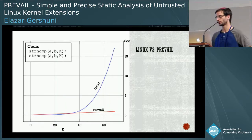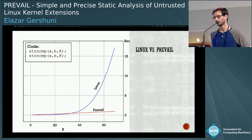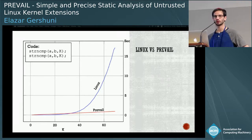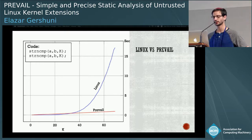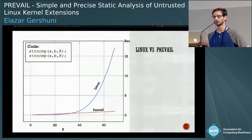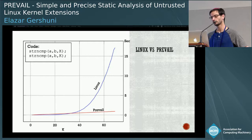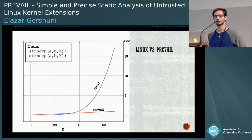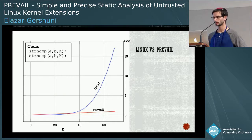Here's an interesting comparison with the existing verifier. We took a simple program — just a pair of strncmp calls — parameterized by the maximum string size. This program has a quadratic number of paths. As you can see, the Linux verifier's runtime grows quadratically, while our tool runs linearly even if we unroll the loops, and when we do not unroll the loops it is actually constant.